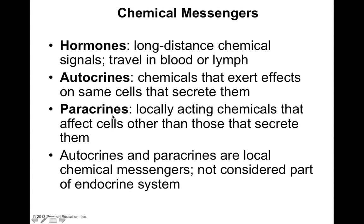A cell in a tissue releases a paracrine chemical messenger, and that chemical messenger will then go on to nearby or adjacent cells and affect those cells in some sort of way. Paracrines are most often used in the digestive system as well as in development. Although hormones, autocrines, and paracrines are all forms of chemical messengers, autocrines and paracrines are not considered hormones because they are local chemical messengers, whereas hormones are part of the endocrine system and travel long distance to distant target tissues.